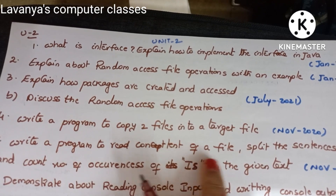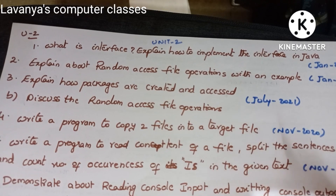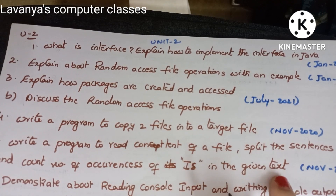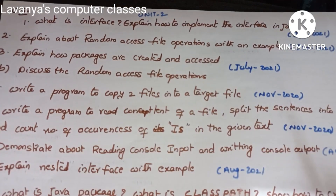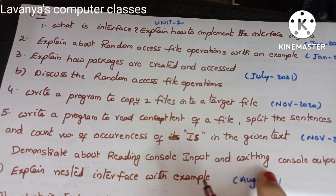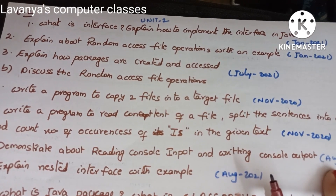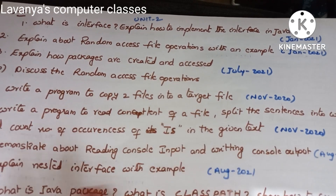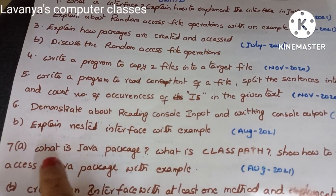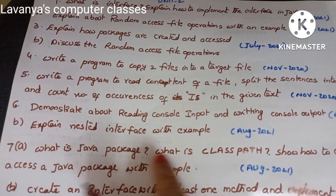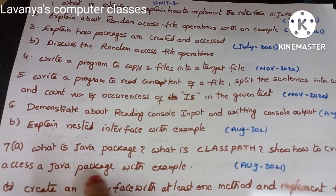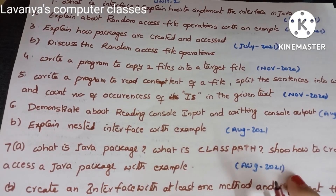Next, 'Write a program to read content of a file, split the sentences into words, and count the number of occurrences of a word in the given text' — November 2020. Then, 'Demonstrate reading console input and writing console output using I/O commands' — August 2021. 'Explain nested interface with an example' — August 2021. 'What is a Java package? What is class path? Show how to create and access a Java package with an example' — August 2021.